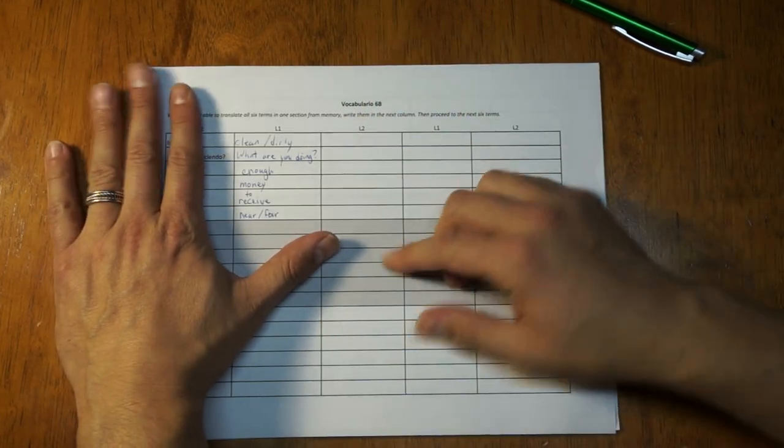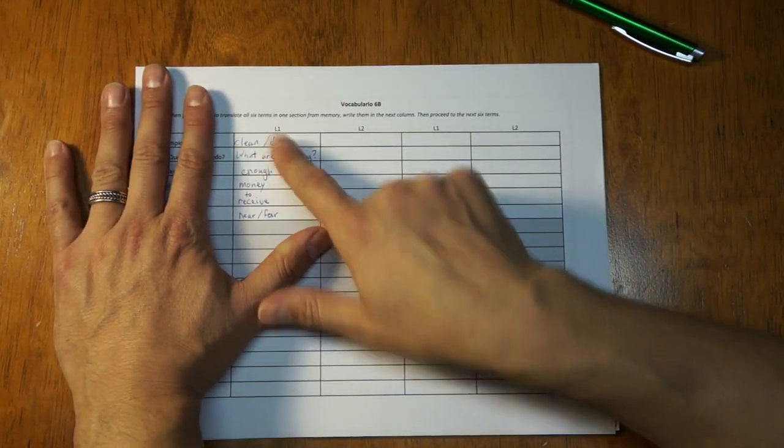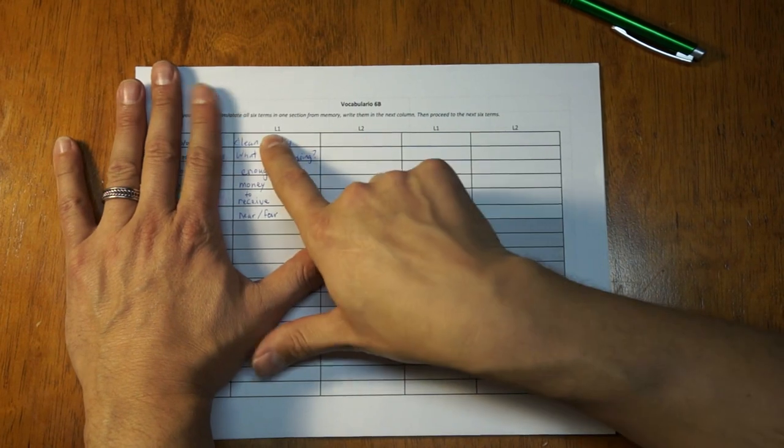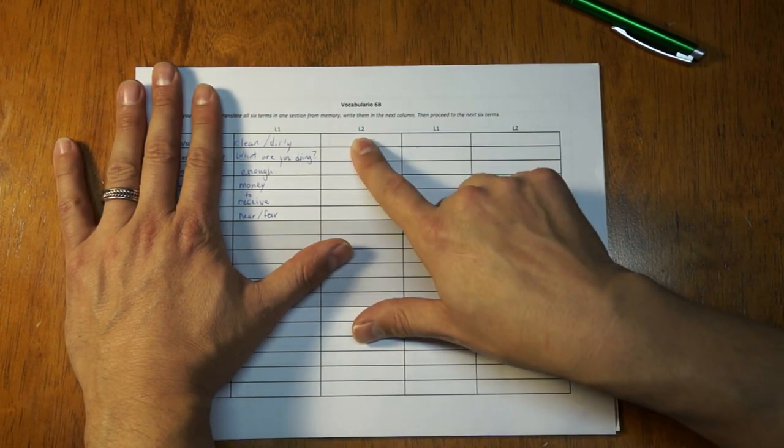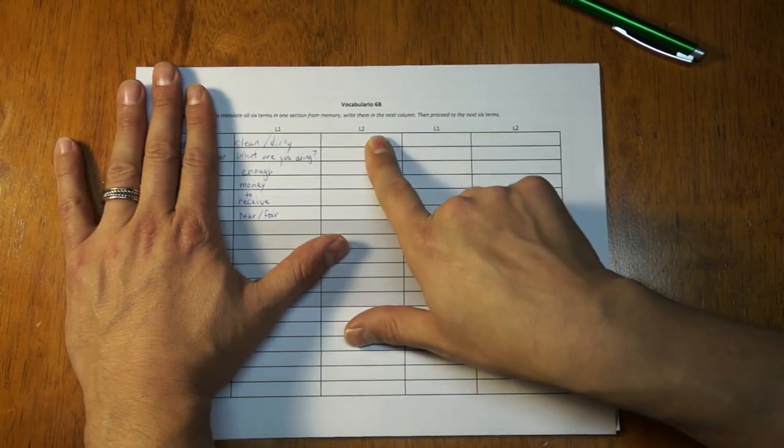Now is where it gets good. You can see that I've written the word now in English. I have to go back to the Spanish. L1 being my native language. L2 being the target language. So here I'm going from English to Spanish.